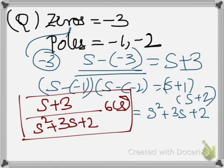So you have the numerator and you have the denominator. You can write down the transfer function: G(s) equals (s+3) divided by (s²+3s+2). Let's look at another example.